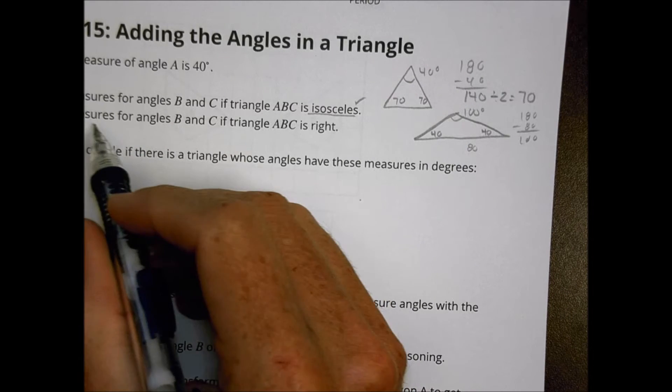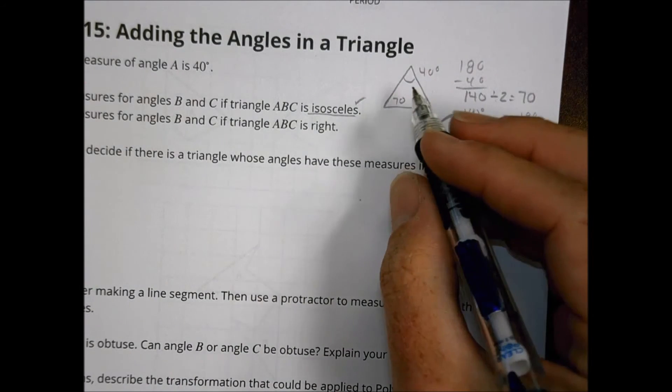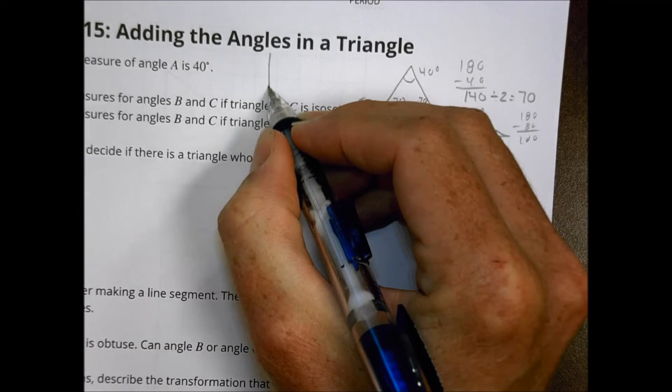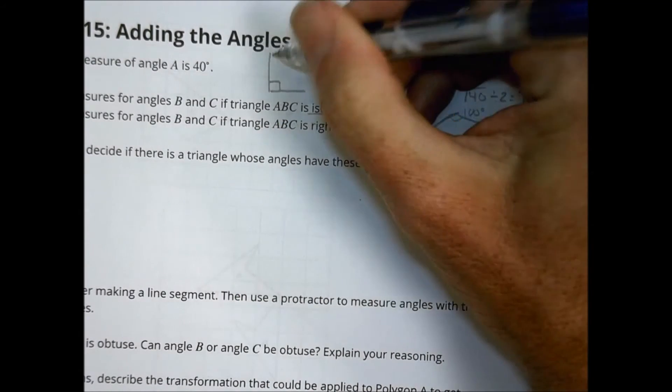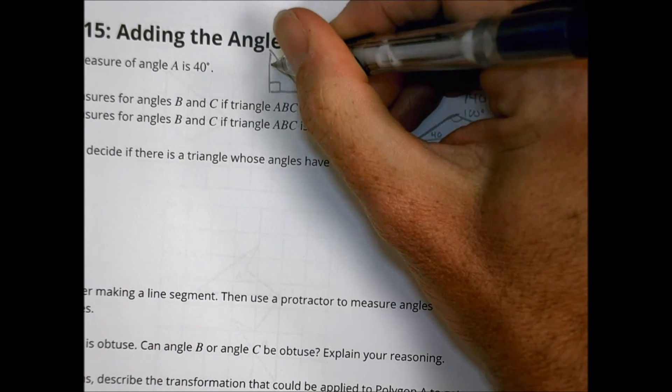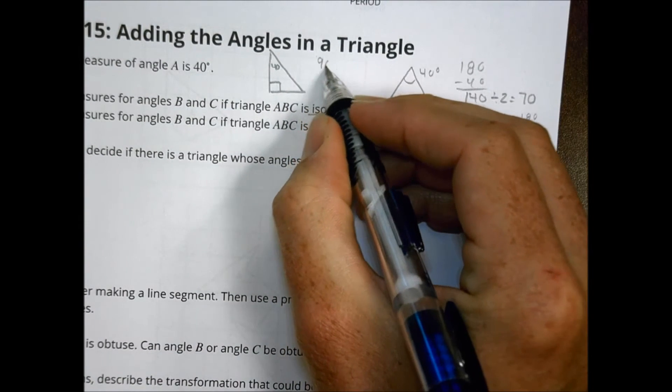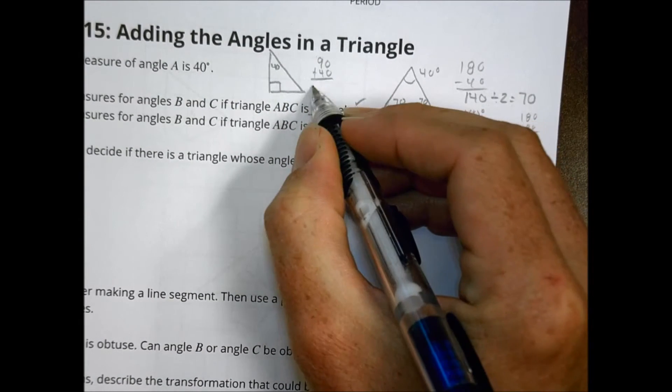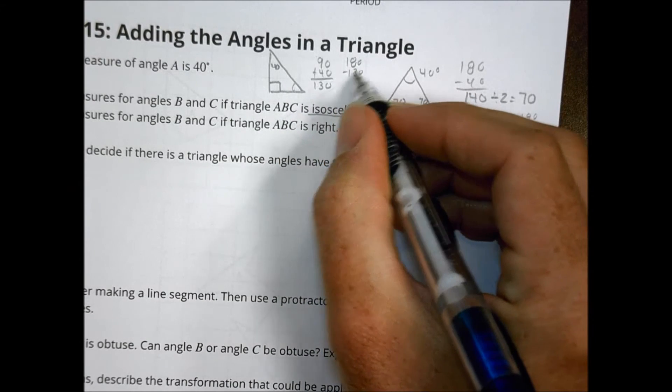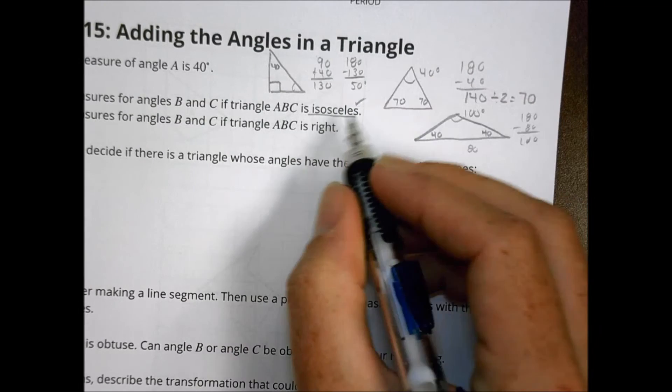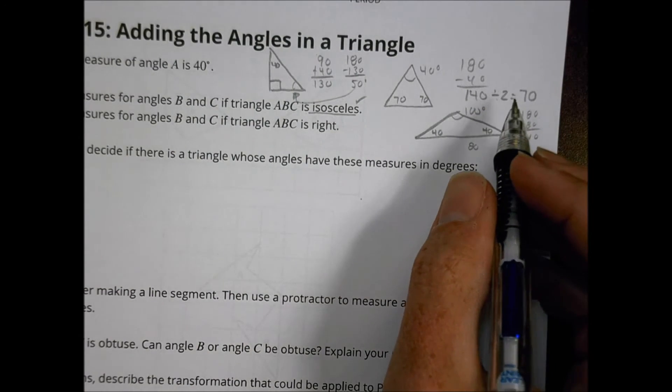For letter B, it says give possible measures for angle B and C if triangle ABC is right. So if it's right, that would mean that I have one that has to be 90 degrees. And if one triangle angle has to be 90 and the other one we're being told is 40, I really only have one other possible solution here, right? Because I have a 90 plus a 40, which is 130. And what's left for me to play with in this corner here is 180 minus 130, which is 50 degrees.